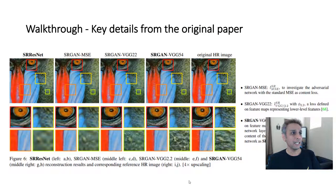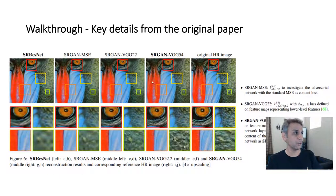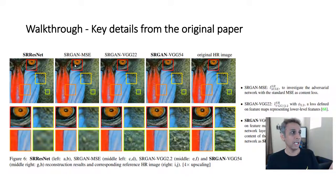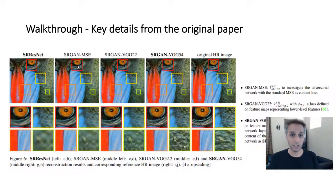You can even stop at block two instead of going all the way to block three. The paper shows results comparing: SR ResNet only, GAN with MSE loss, GAN with shallow VGG loss, and GAN with deep VGG loss. Their summary is that going deep with VGG features as your loss is a much better choice than using shallow features or just mean squared error.